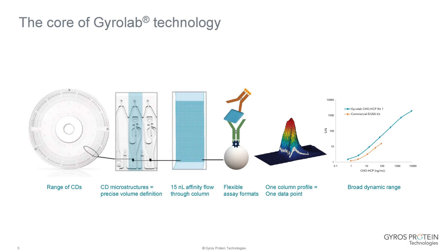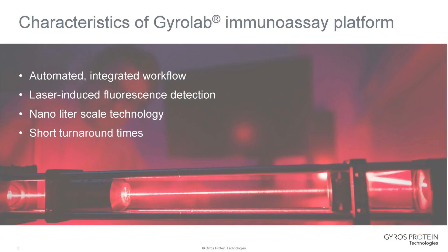Because detection involves laser-induced fluorescence, this gives us good assay sensitivity but also a broad dynamic range. The characteristics of the Gyrolab immunoassay platform include being fully automated with an integrated workflow. Detection via laser-induced fluorescence gives a broad dynamic range and good sensitivity. The volumes are nanolitre scale, saving both reagents and sample, and providing short turnaround times — ideal for assay development, as a full assay takes one hour to perform.